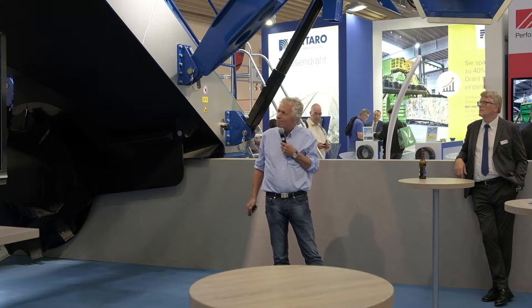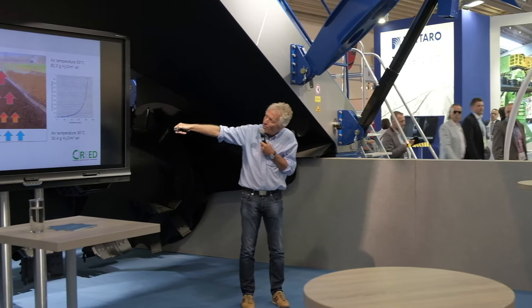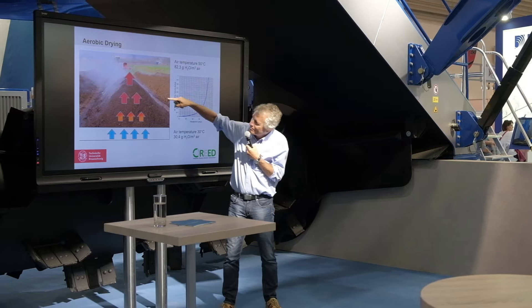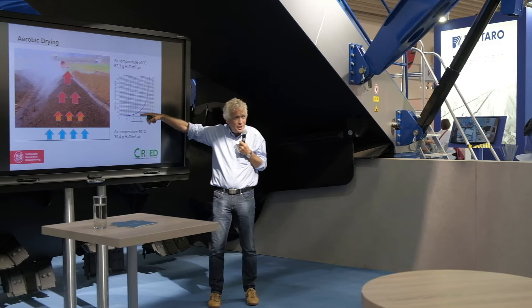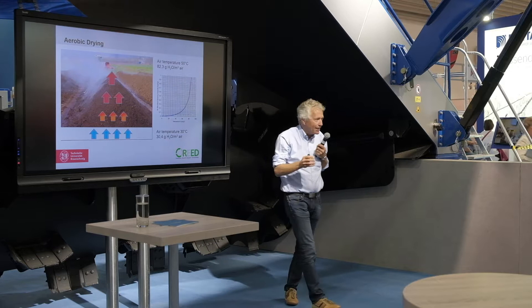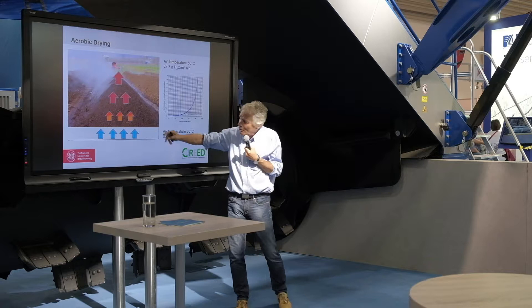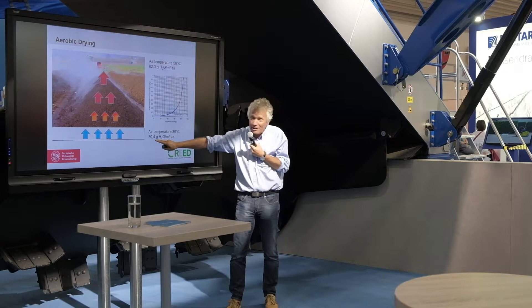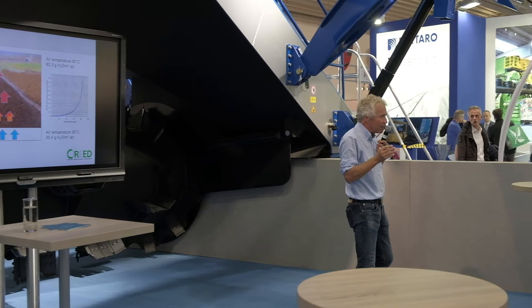How does the drying process work? It is very simple — this is a compost pile. From the bottom you blow in cold air, which means dry air. The higher the temperature the air has, the higher its water-holding capacity. The composting process starts and lifts up the temperature of the air. Air at 30 degrees can carry 30 grams and air at 50 degrees can carry 80 grams. This is a simple system of aerobic drying.